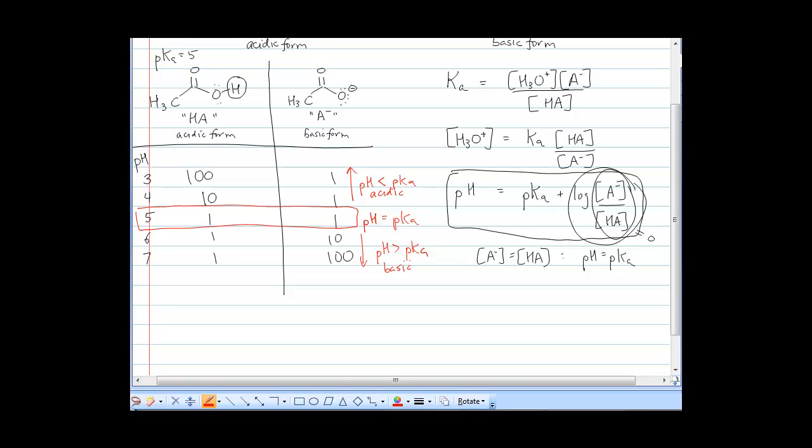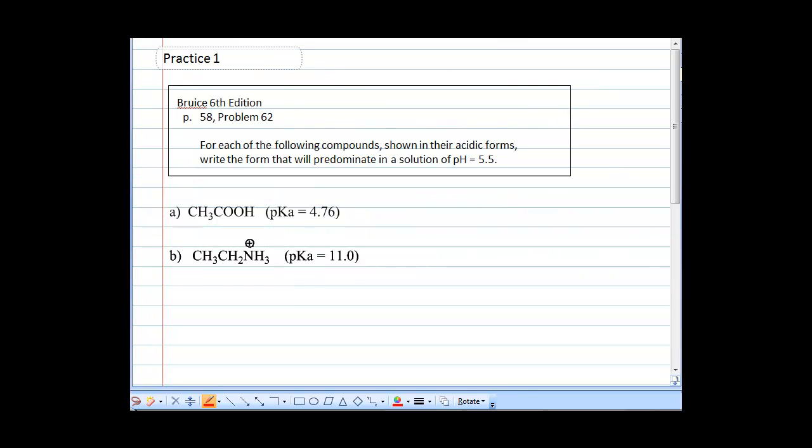So let's try some problems. For each of the following compounds shown in their acidic forms, write the form that will predominate in a solution of pH 5.5. Go ahead and try this problem and pause it, and then come back when you're ready. Okay, so what I've done is I've compared the pH to the pKa. And for part A, you can see the pH of 5.5 is greater than the pKa. So because the pH is greater, think of it as it's more basic. So it should be the basic form of the carboxylic acid. So in that case, it will be CH3COO-. That's the structure.